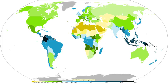A significant portion of the annual precipitation in any particular place falls on only a few days, typically about 50% during the 12 days with the most precipitation.